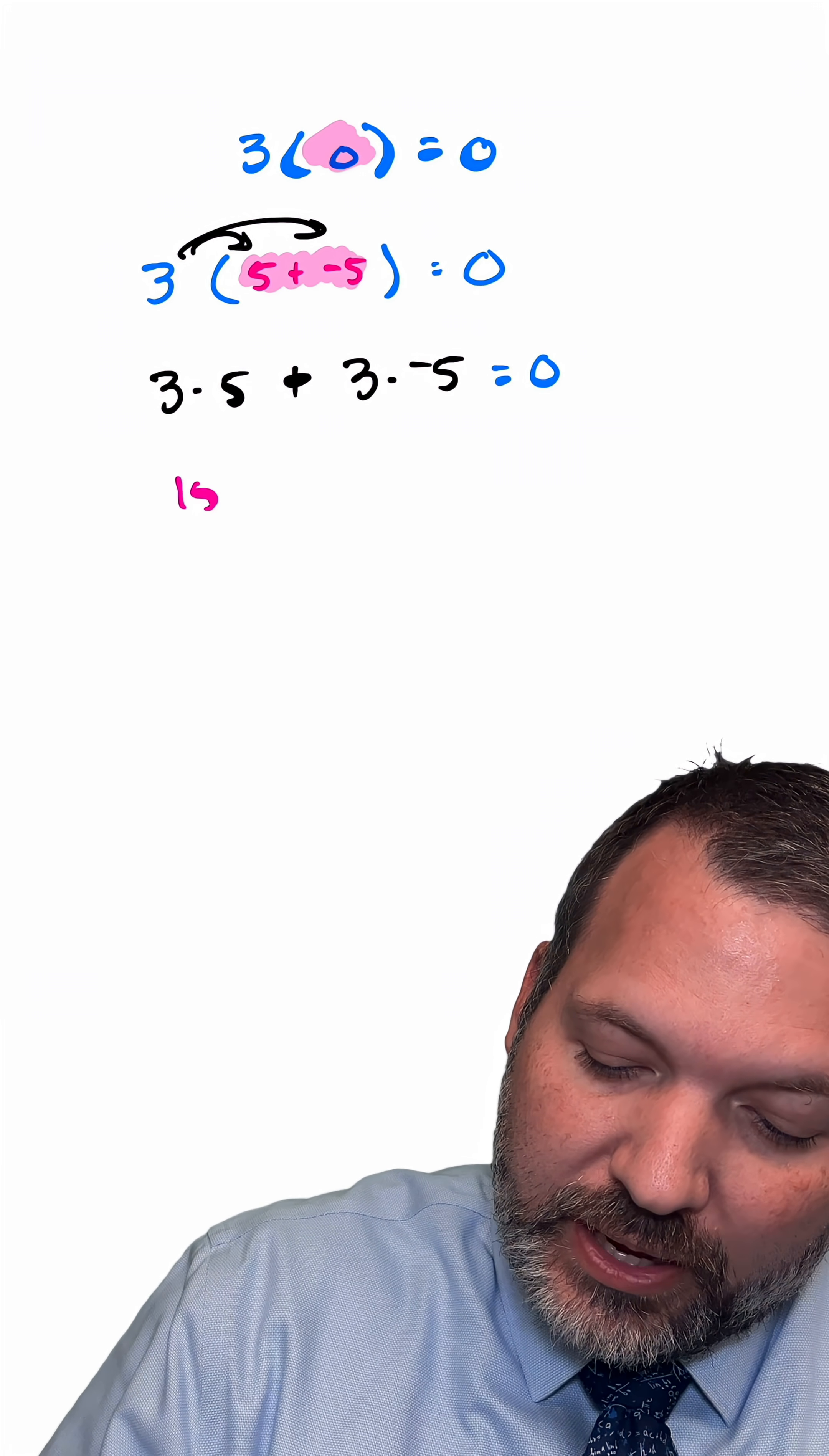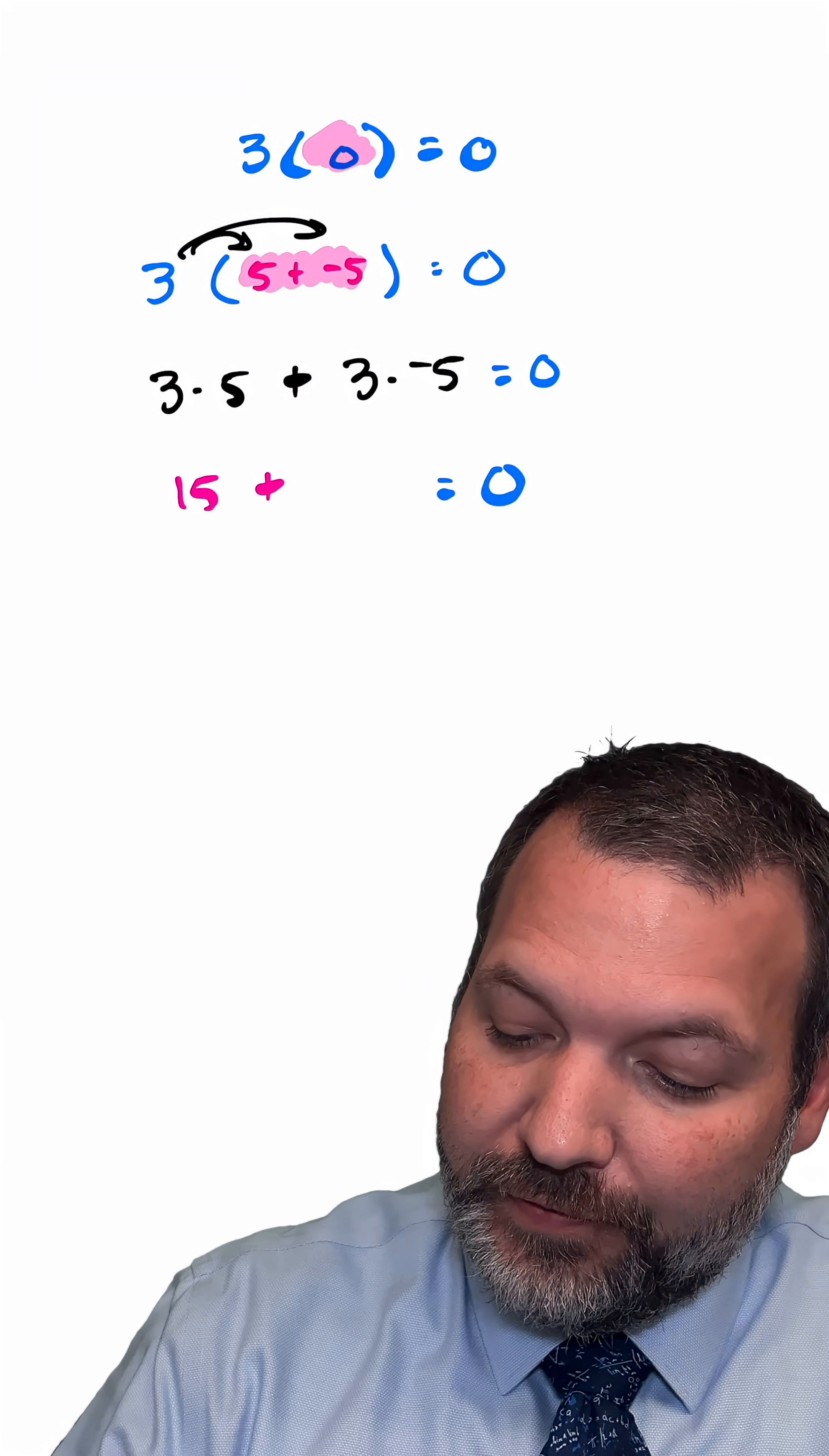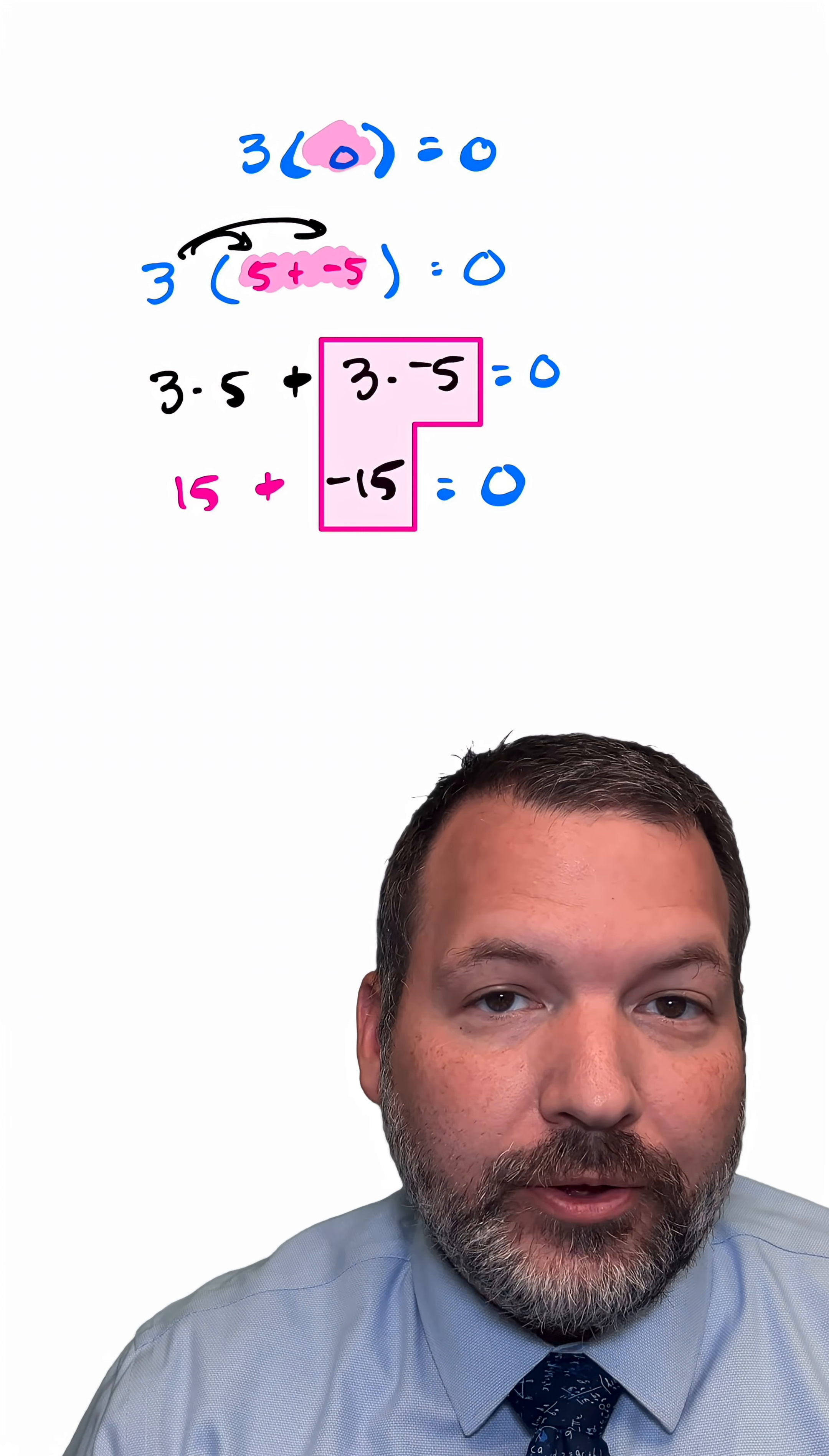3 times 5, of course, we can go ahead and say is 15, and let's say we don't know what 3 times negative 5 is, but we do know that this sum is supposed to be 0. What plus 15 would make 0? The additive inverse of 15. In other words, negative 15, and so it should be the case that these two quantities, 3 times negative 5 and negative 15 itself, are actually the same value.